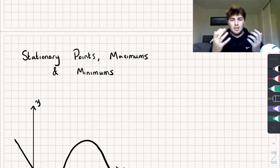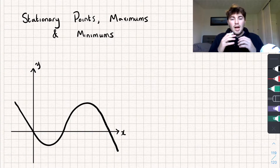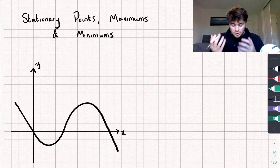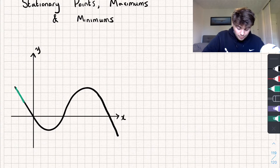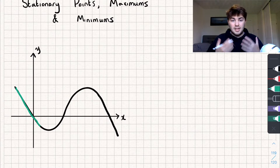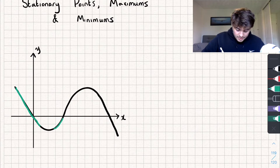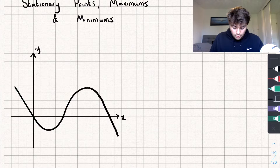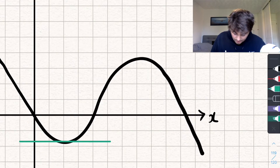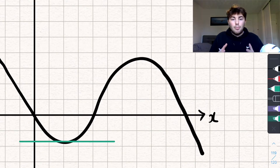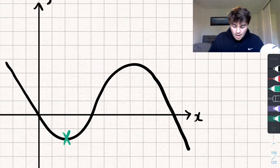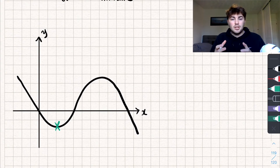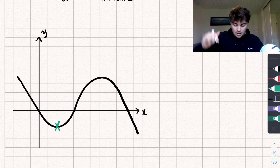So let's start off with what even is a stationary point. You can see here I've drawn a curve, and a stationary point is any point on the curve where your gradient is equal to zero. Say we were looking at this part of the curve here — it's decreasing so it has a negative gradient, but then as we turn and come up the gradient becomes positive. So somewhere between those two points the gradient equals zero, somewhere like here. Another word for a stationary point is a turning point because it's a point on the curve where it turns.